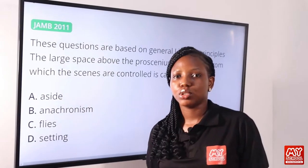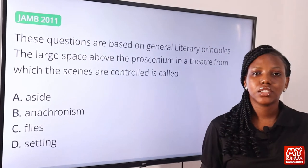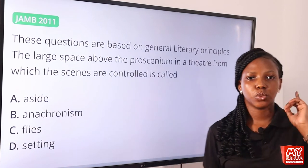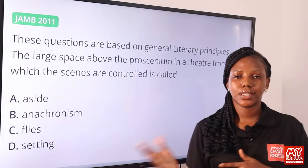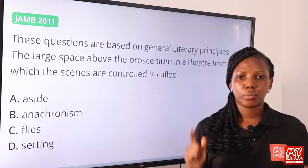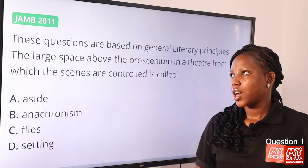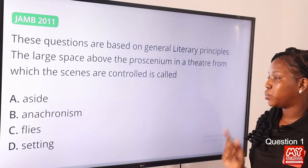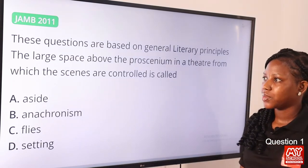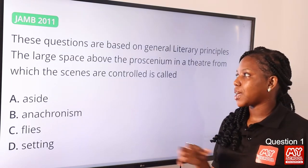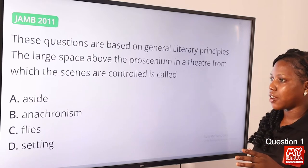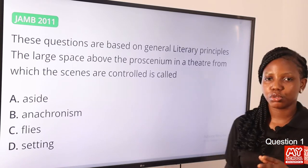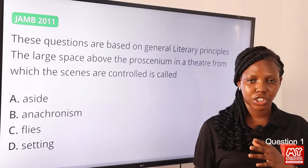Welcome back to my school channel. So in this video, we'll be solving questions 1 to 20. Now we'll begin with question 1. These questions are based on general literary principles. The large space above the proscenium in a theatre from which the scenes are controlled is called dash.